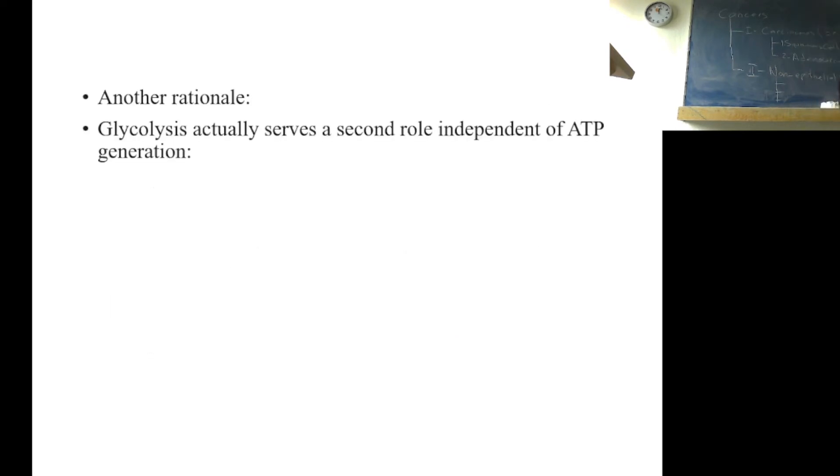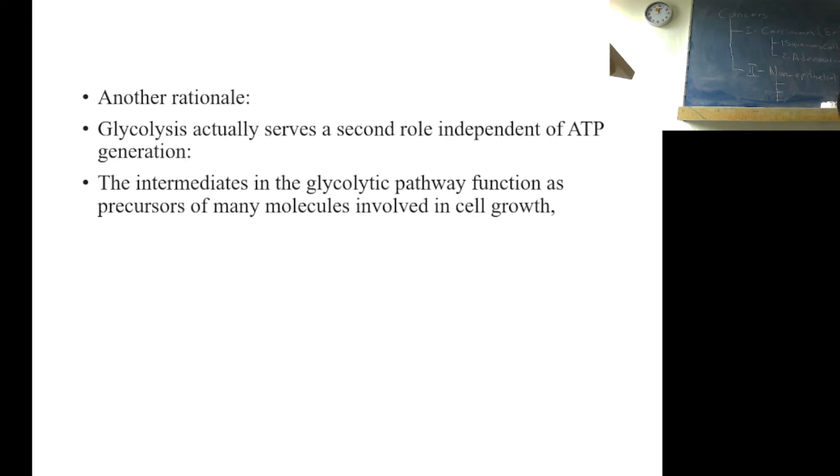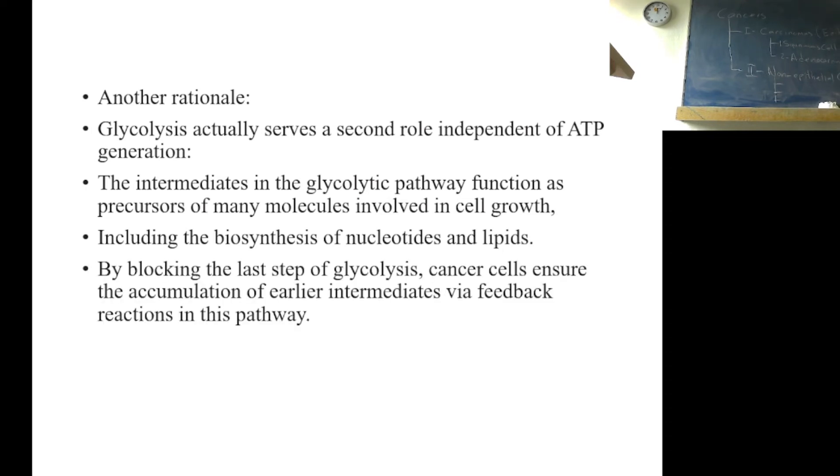Another rationale: Glycolysis actually serves a second role independent of ATP generation. The intermediates in the glycolytic pathway function as precursors of many other cellular pathways. For example, production of many other molecules involved in cell growth, including biosynthesis of nucleic acids and lipids. By blocking the last step of glycolysis, cancer cells ensure the accumulation of earlier intermediates via feedback reactions in this pathway. These glycolytic intermediates can then be diverted into critical important biosynthetic reactions.